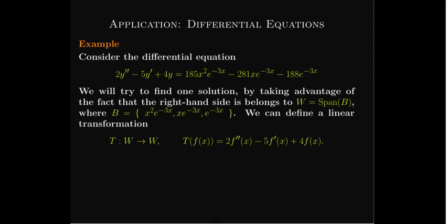Let's look at an example. Take 2 times the second derivative minus 5 times the first derivative plus 4 times the function itself, and set that equal to a linear combination of functions in B with coefficients 185, negative 281, and negative 188. We're trying to find a function f of x such that when I take 2 times its second derivative, minus 5 times its first derivative, plus 4 times the function itself, I get that output.